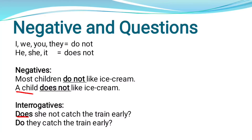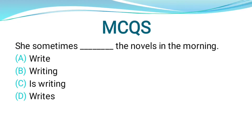Now let's look at MCQ-style questions for Simple Present. When you see words like 'sometimes', 'always', 'often', 'usually', 'every day', 'daily' in a sentence, these are hints to use Simple Present tense. For example: 'She sometimes writes' — 'she' is a singular subject, so use the singular verb form.